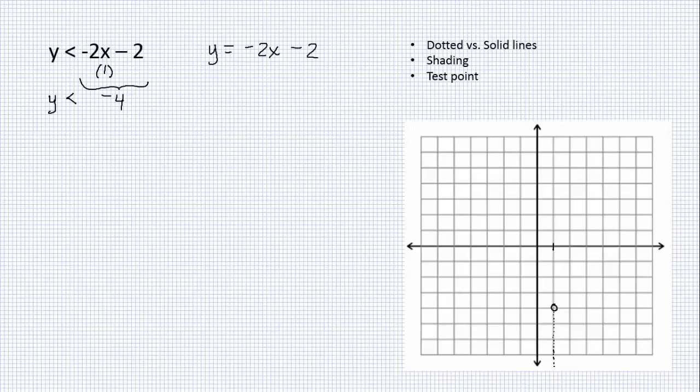So let's do that. The y-intercept is at negative 2, and the slope is negative 2. So the slope is negative 2 over positive 1, or 2 over negative 1, whichever way you like. From this point, I think I'll go up 2 — so up 2, backwards 1, like that.